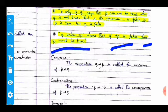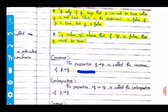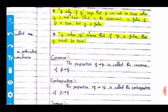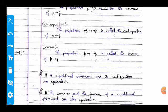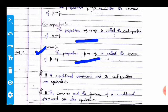Now let's look at the converse, contrapositive, and inverse. The converse of p implies q is q implies p. The contrapositive is: not-q implies not-p. The inverse is: not-p implies not-q, which is called the inverse of p implies q.